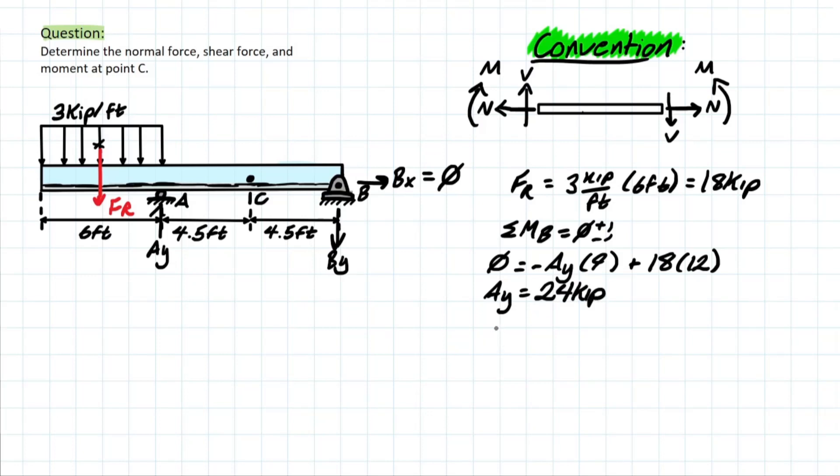And then now we can take FY to solve for the B. And what is B going to be? Negative BY plus AY, which is 24. And we have the FR, which is 18. So we know BY will equal six kips.